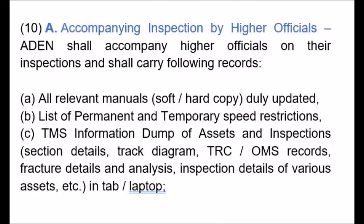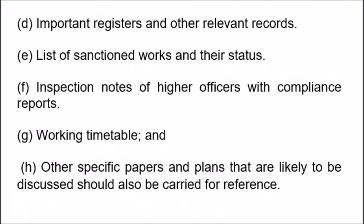Accompanying inspection by higher officials: A DEN shall accompany higher officials on their inspections and shall carry the following records: all relevant manuals, soft and hard copy, duly updated; list of permanent and temporary speed restrictions; TMS information dump of assets and inspections, section details, track diagram, TRC-OMS records, fracture details and analysis, inspection details of various assets, etc., in tab or laptop; and important registers and other relevant records.